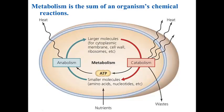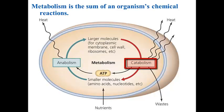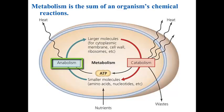Recall that metabolism is the combination of catabolic and anabolic reactions in the cell. Catabolism, or exergonic reactions, is where reactants have lots of potential energy and the energy is released as products are formed with less potential energy. And in anabolism, or endergonic reactions, reactants have less potential energy and energy is required, and products are formed with more potential energy.